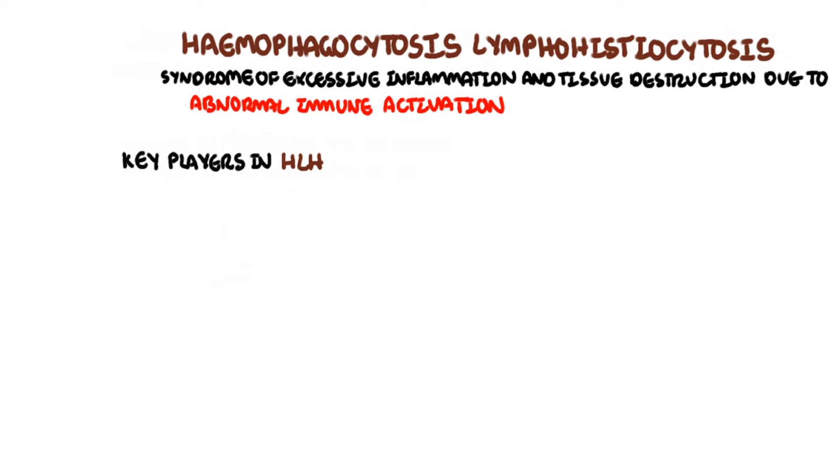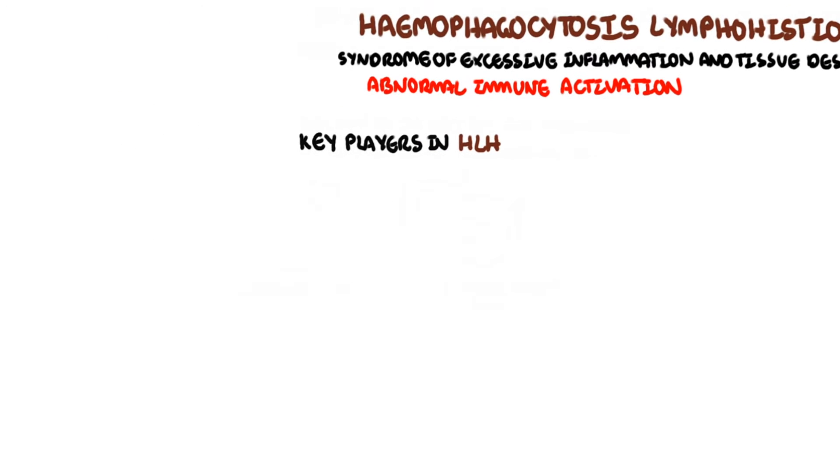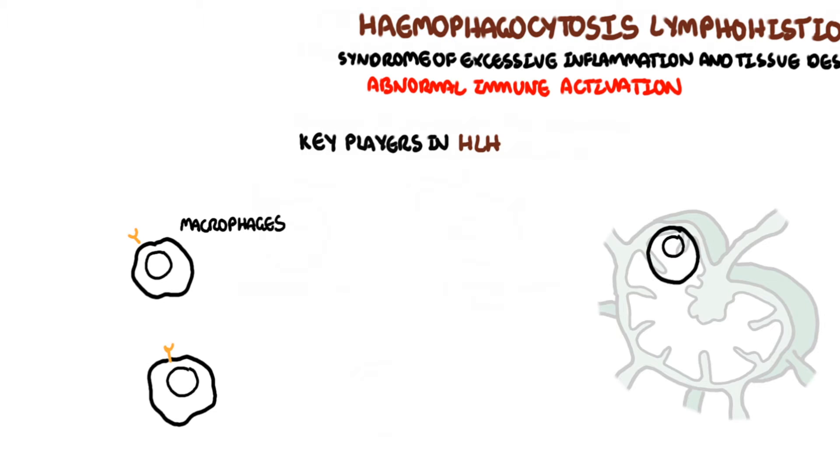Now there are a number of key players in the pathophysiology: the macrophages, the phagocytes, and then you have the cytotoxic T lymphocytes, which are your lymphoid cells, as well as your natural killer cells.